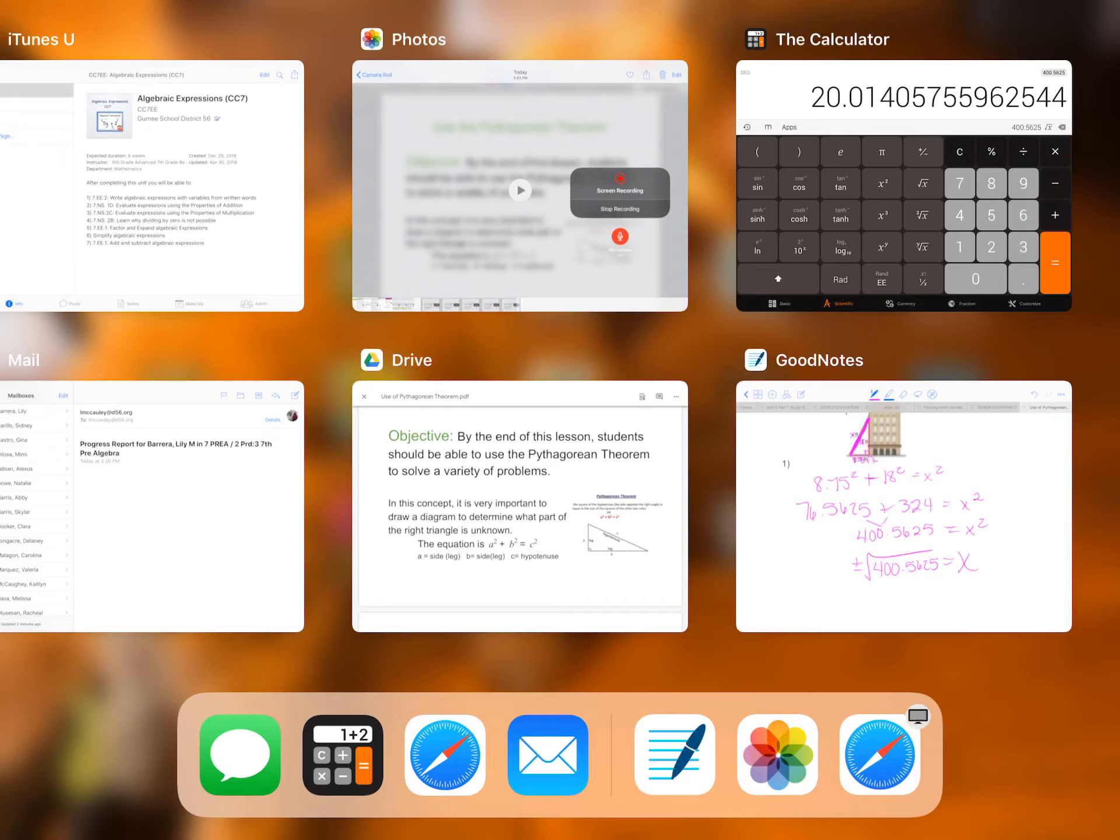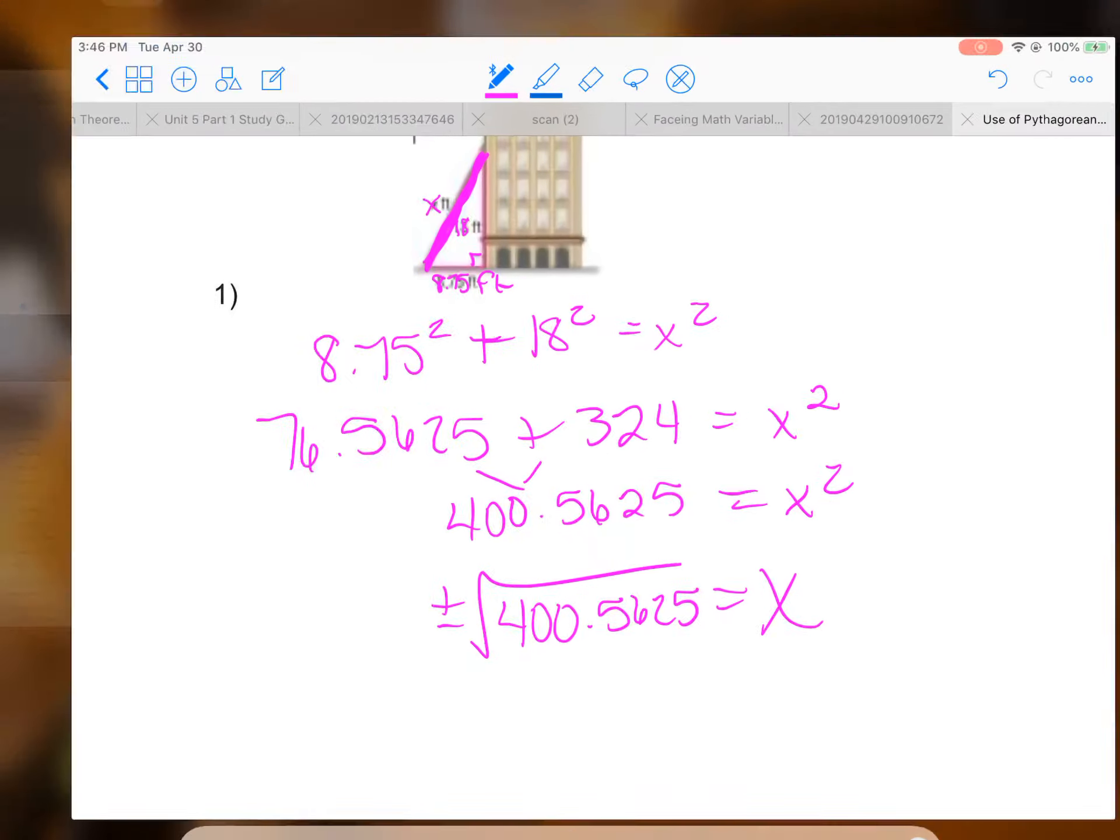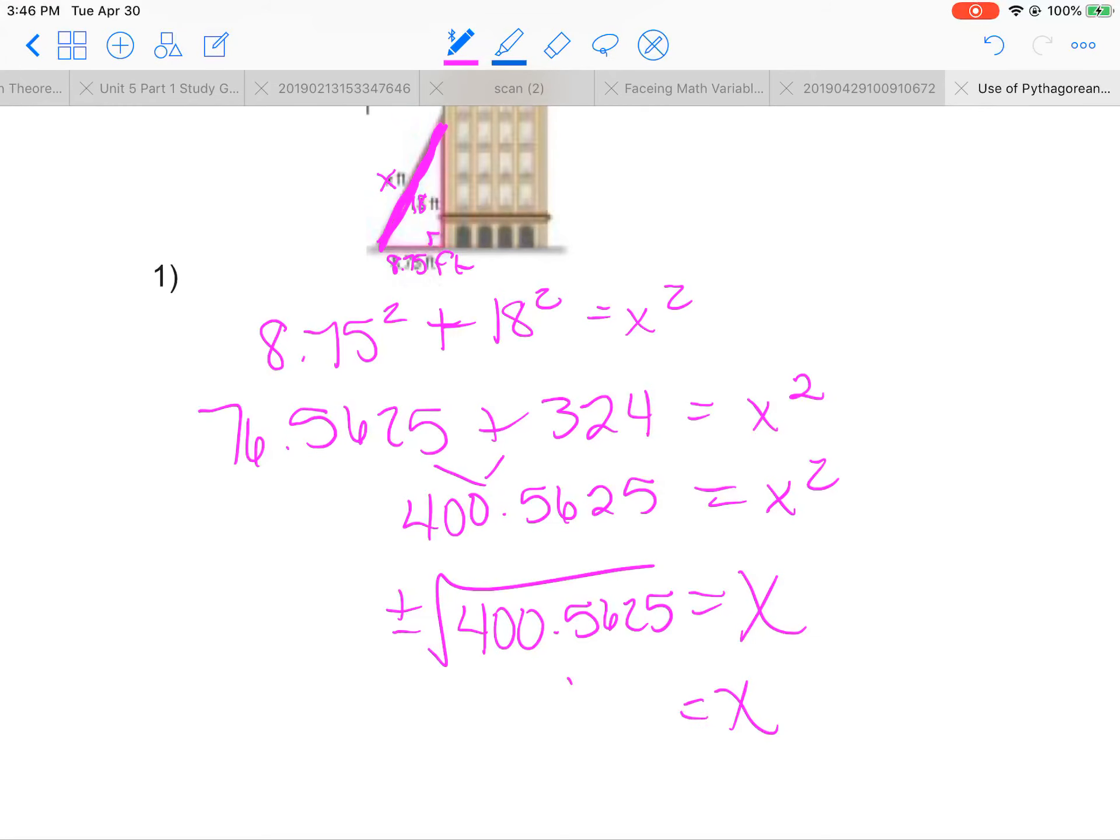It says to round to the nearest tenth, I believe, so it would just be 20. So x equals plus or minus 20.